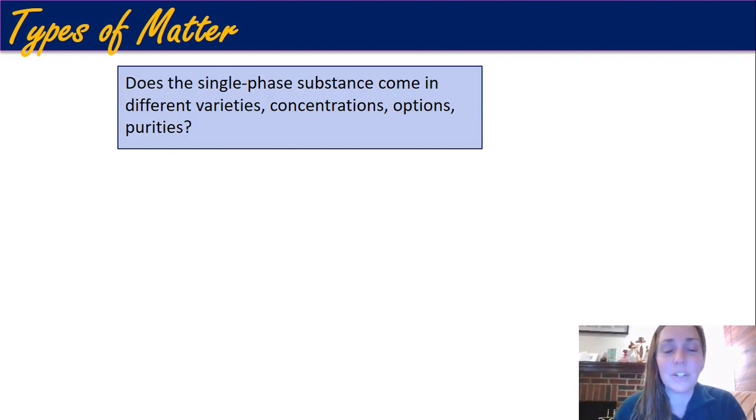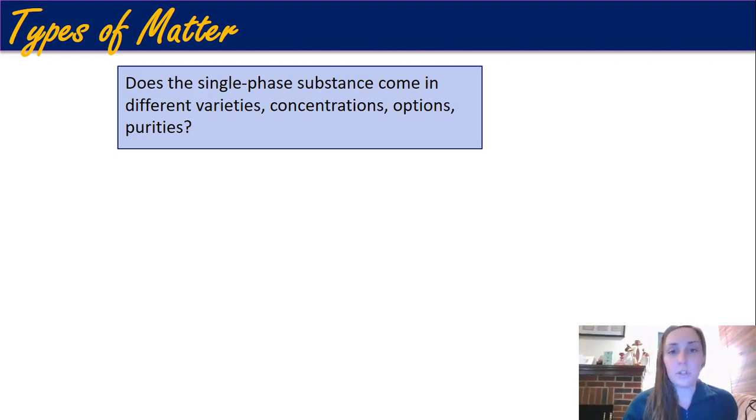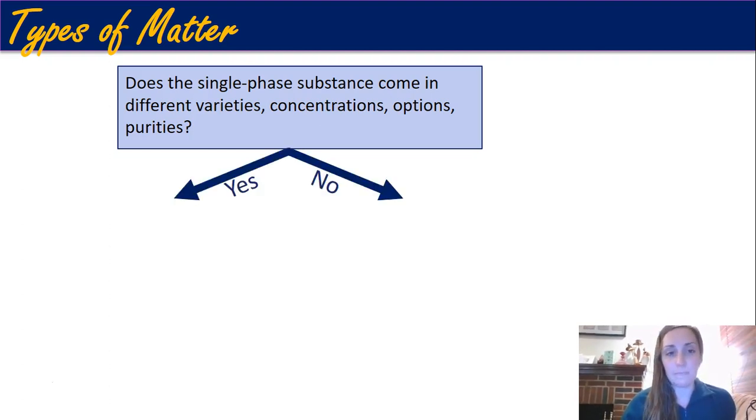Here's the next question: does the single-phase substance—it has to be single phase because everything that was more than one phase went away in the last question—does this single-phase substance come in a different variety, or does it come in multiple concentrations or options or purities? Yes or no? If you can get a variety of this, even if it looks the same throughout, if it isn't always the same every single time you get it, if there are differences, then you follow yes here and it's a homogeneous mixture.